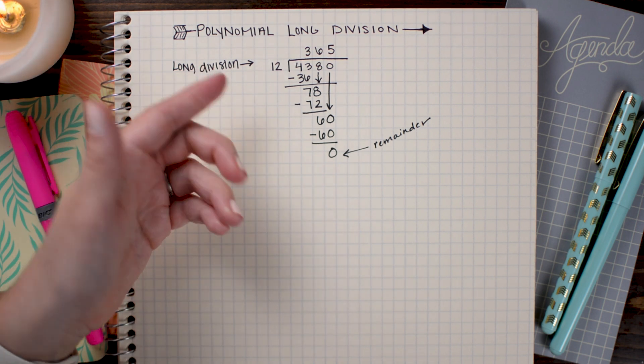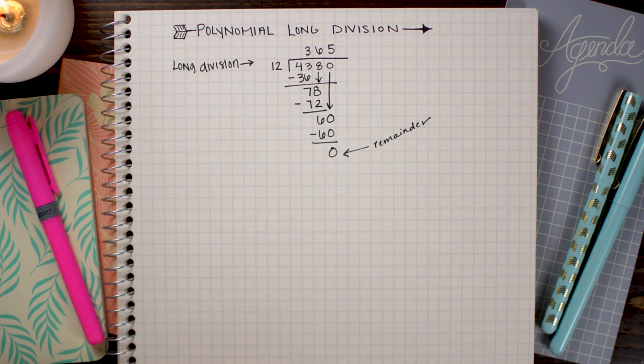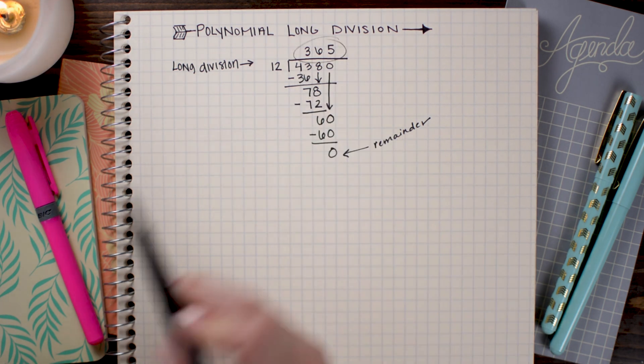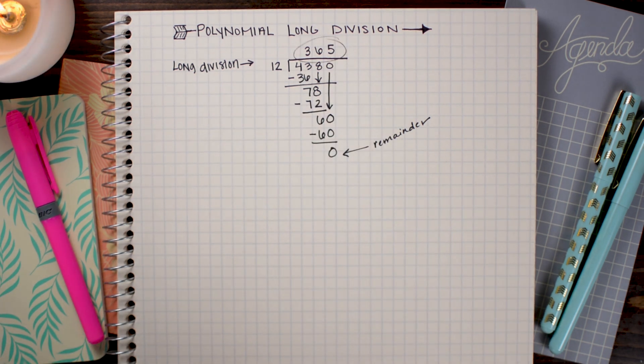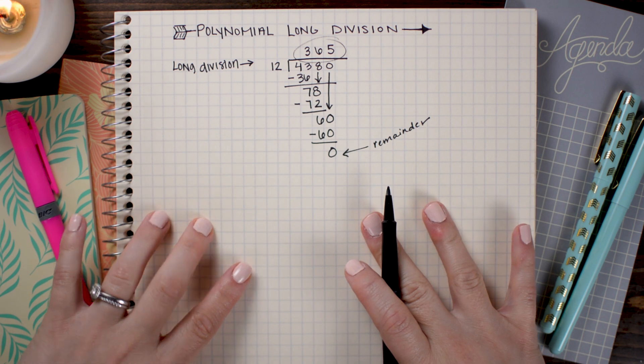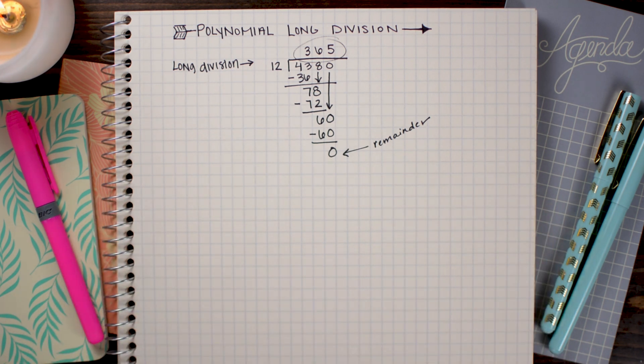In this problem, we don't have a remainder, so we don't have to write anything else up here. And our answer is simply 365. Now that we've recapped long division, let's jump into polynomial long division.